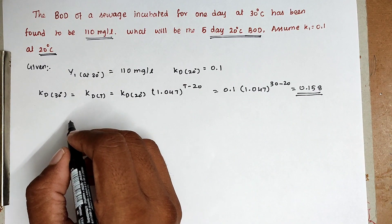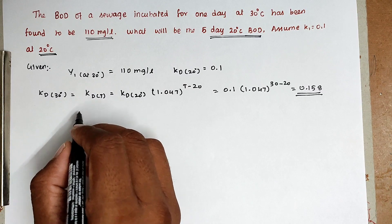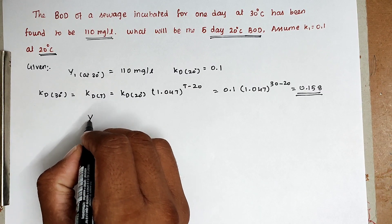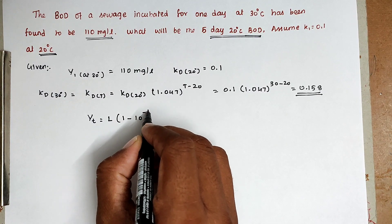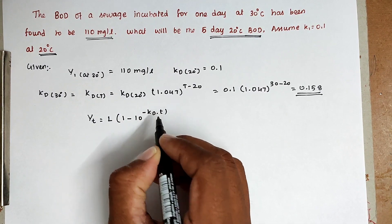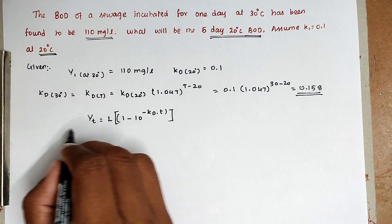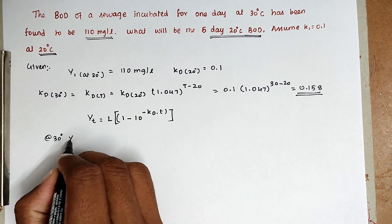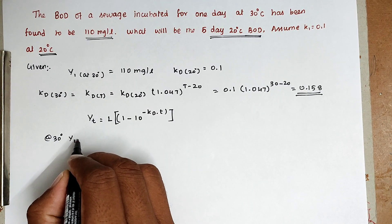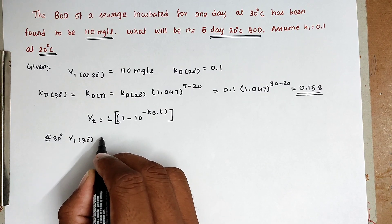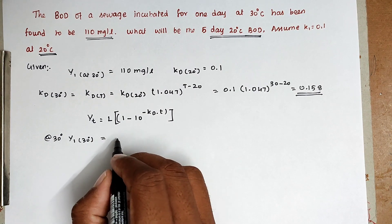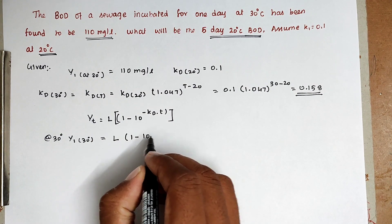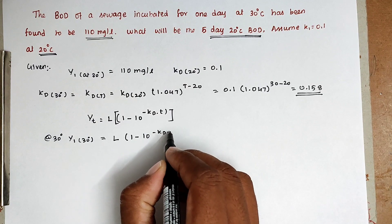Now we can find the ultimate BOD, L, using the formula: Y_T = L × (1 − 10^(−KD × T)). We know the 1-day BOD at 30 degree Celsius, so we can use this formula: Y at 1 day, 30 degree Celsius = L × (1 − 10^(−KD × T)).